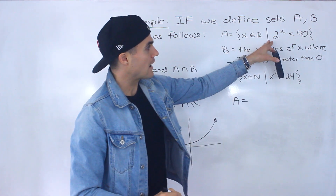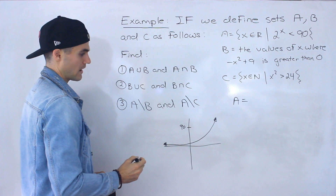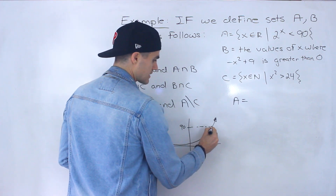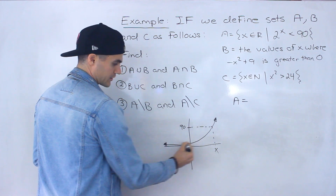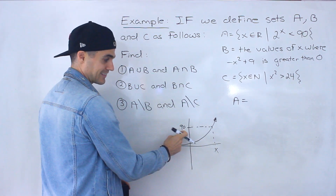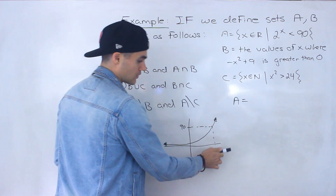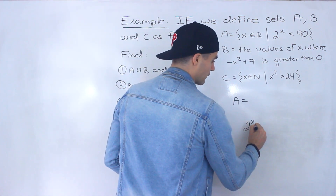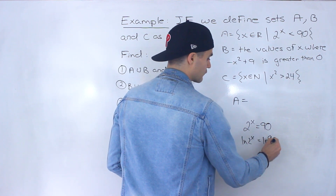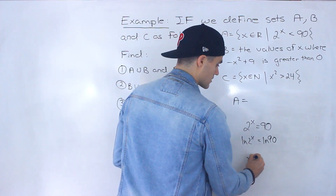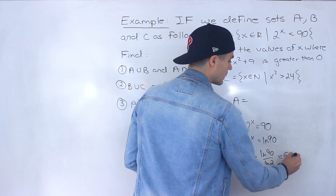Notice that in this set, 2 to the power of x has to be less than 90. So if we put 90 here as the y value, set A is all of the x values that make this function 2 to the power of x less than 90. It's going to be all x values from negative infinity to that x value right there. We can find that x value by asking when does 2 to the power of x equal 90 — we ln both sides, bring the x down, divide both sides by ln 2. So x is going to be ln of 90 over ln of 2, which is approximately 6.49.